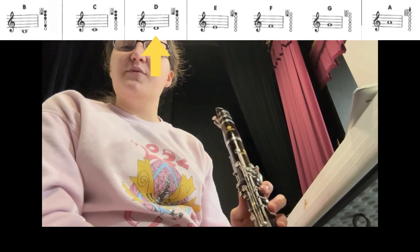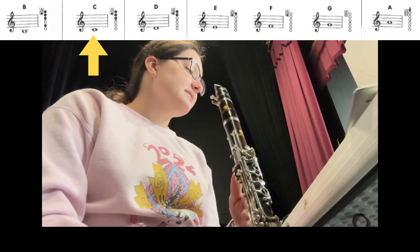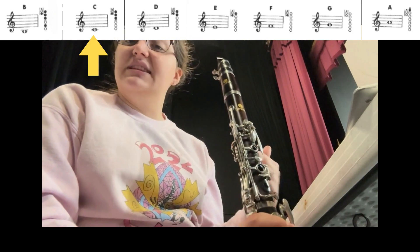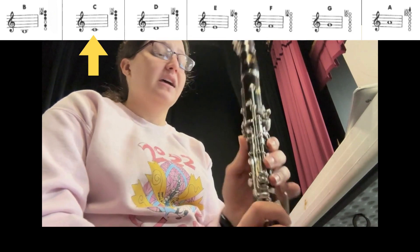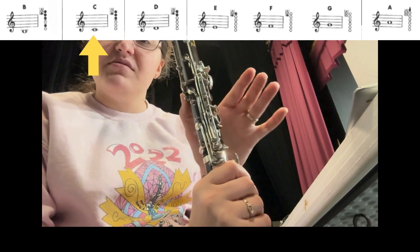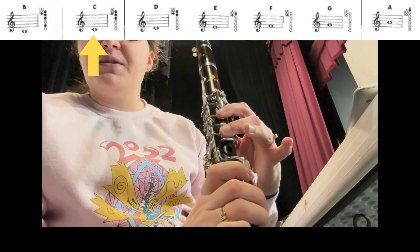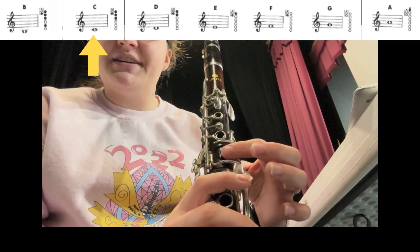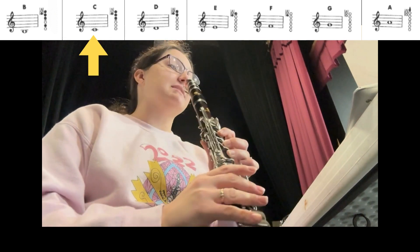And then the next note we have is C, which is that first line below the staff, and that will have our thumb down, our first finger, second finger, and third finger. Make sure our third finger is covering that hole completely, and it will sound like this.